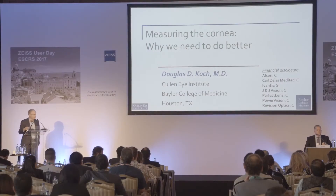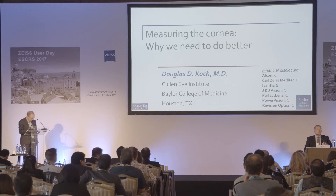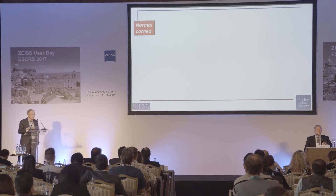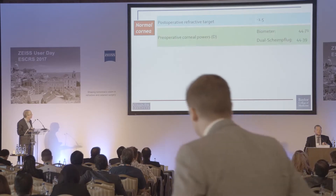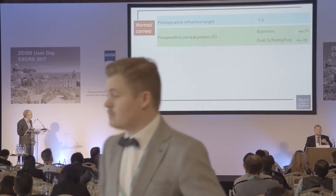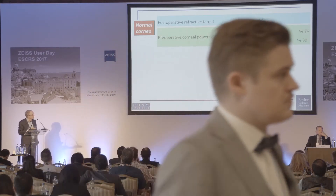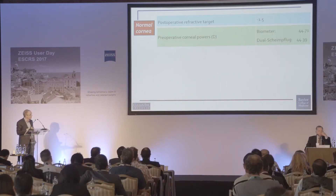Measuring the cornea — why we need to do better. I do consult with Zeiss, so I want to acknowledge that point. If you take a patient with a normal cornea — this is a patient of mine — the refractive target was minus 1.5. You can see the biometer readings there for this patient with two different devices.